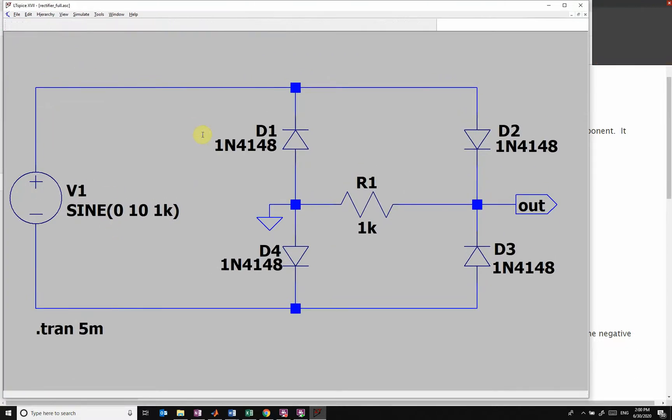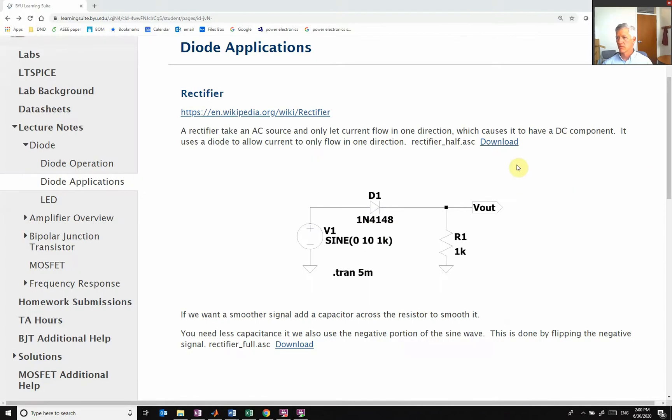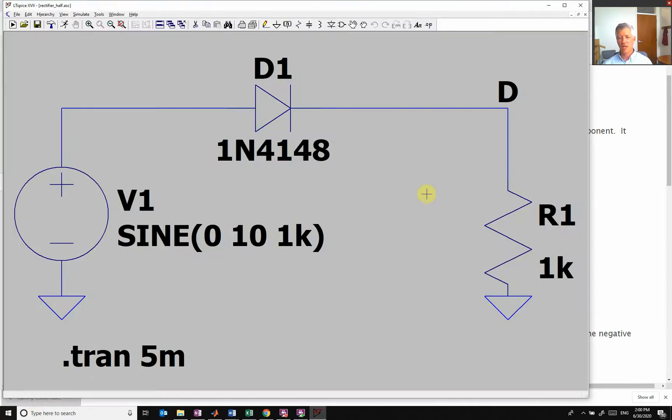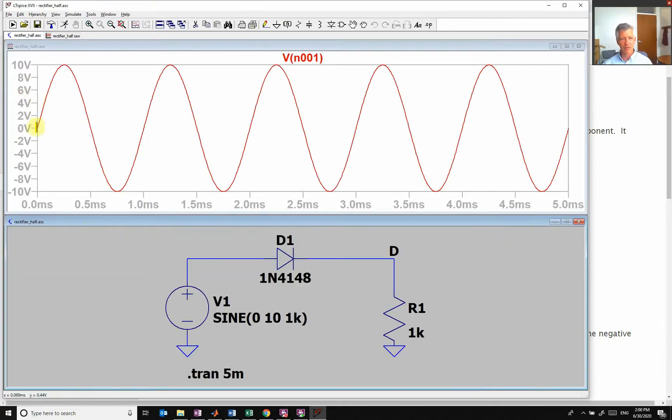So let's look at our simple circuit here. Okay, I'm going to try that again. I think I clicked on the wrong one. Okay, so here is our basic circuit. So if I run this and look at the voltage right here, here is my sine wave. So it's going from 0 to 10 and negative back and forth.